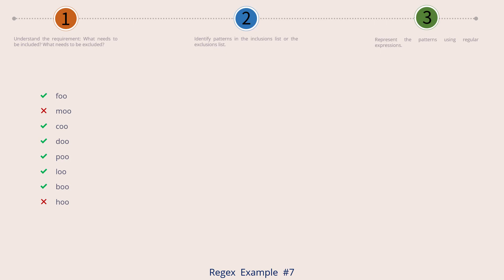Poo, loo, boo — there are 6 green ones. The 2 red ones also are oo's; they are moo and hoo. Pattern wise, there is nothing else that makes them differ. Let's move to the next step. If you take a look at the miniature process flow at the top and read the description for step 2, it reads: identify patterns in the inclusions list or the exclusions list. For all examples until now we have been trying to identify patterns in the inclusion list. Sometimes it might be easier to represent the exclusion list using a pattern and simply negate it.